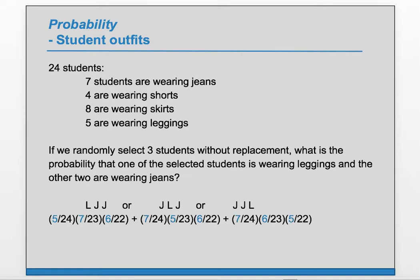Notice that the numerators, even though they're in different order, are equivalent: 5 times 7 times 6, 7 times 5 times 6, 7 times 6 times 5. The denominators are also equivalent: 24 times 23 times 22. So these three terms are equivalent. We could evaluate them separately and add them up, but since they're equivalent, we can just evaluate one of them and multiply it by 3.